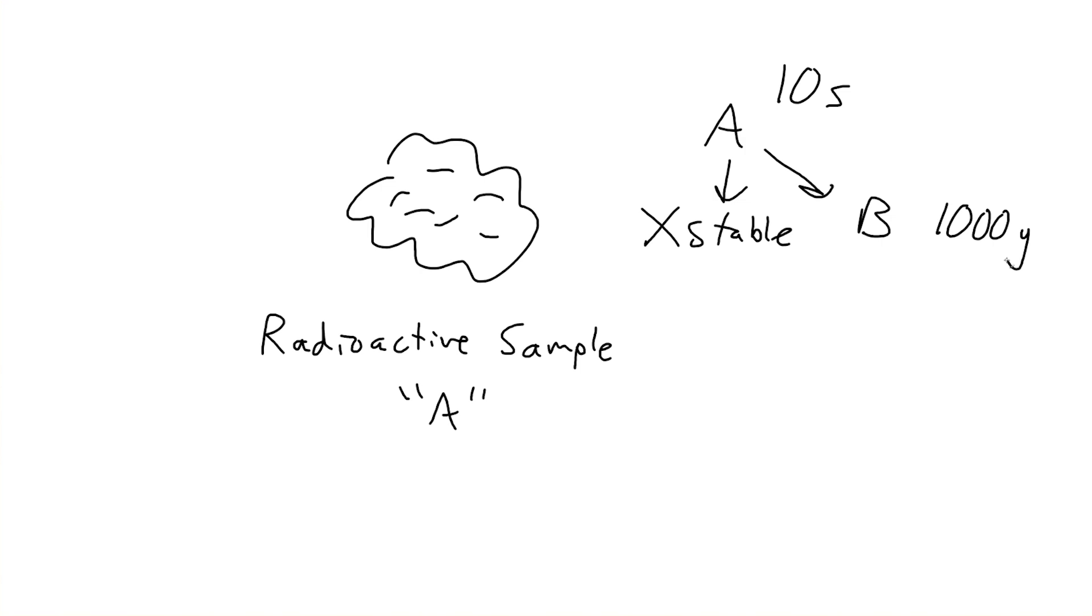Before we move on, I'd like to briefly discuss what you get after a radioactive material decays. Here's a radioactive sample A. Now, just because A has decayed away does not necessarily mean it has become a stable atom. It likely decayed away into radioactive sample B. So it likely just decayed into something else radioactive. So just because one radioactive sample decays away, does not mean it has become something stable. It may become another radioactive material that has a completely different half-life than the one we just did. So say A had a half-life of 10 seconds, and maybe this next radioactive material has a half-life of 1,000 years.